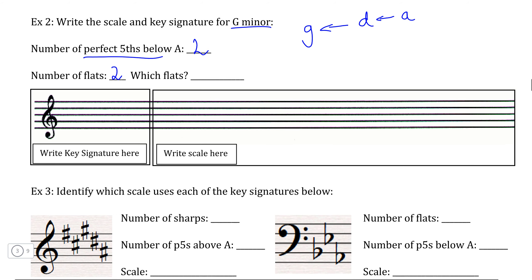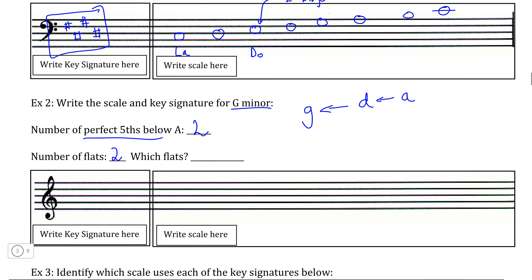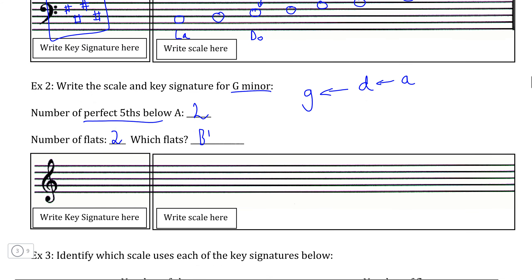And if we use the order of flats, we know the first two flats are B and E. So we can put B flat and E flat in our key signature here and construct the scale of G minor. So if G is here, if we sing our scale going up — La, Ti, Do, Re, Mi, Fa, Sol, La — and there is our G minor scale.